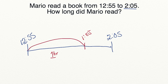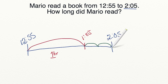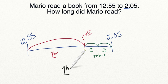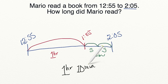So now I'll put in five-minute intervals: 1:55 to 2:00 is 5 minutes, and 2:00 to 2:05 is another 5 minutes — two five-minute intervals. Adding it all together: 1 hour, plus 5 minutes plus 5 minutes equals 10 minutes. Mario read for 1 hour and 10 minutes.